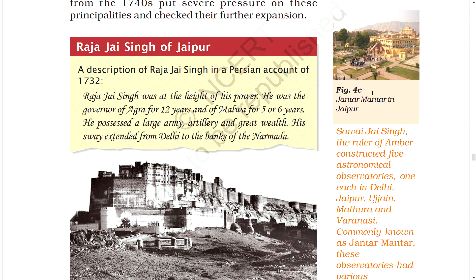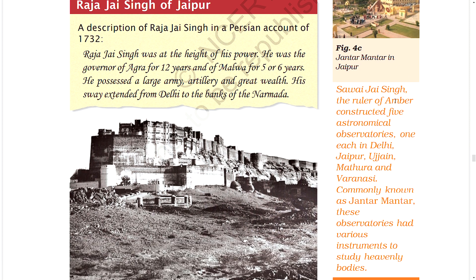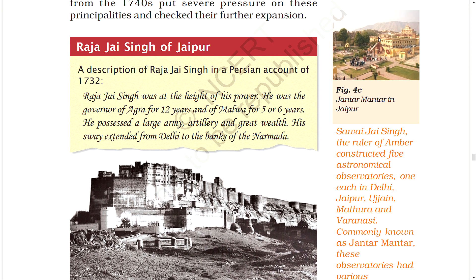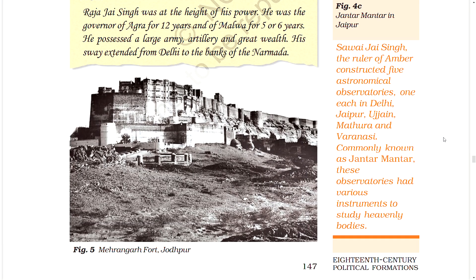A Persian account of 1732 describes Raja Jai Singh at the height of his power: he was governor of Agra for 12 years and of Malwa for 5 or 6 years, possessed a large army, artillery, and great wealth, and his sway extended from Delhi to the banks of the Narmada. Sawai Jai Singh, the ruler of Amber, constructed five astronomical observatories — one each in Delhi, Jaipur, Ujjain, Mathura, and Varanasi — commonly known as Jantar Mantar, which had various instruments to study heavenly bodies.